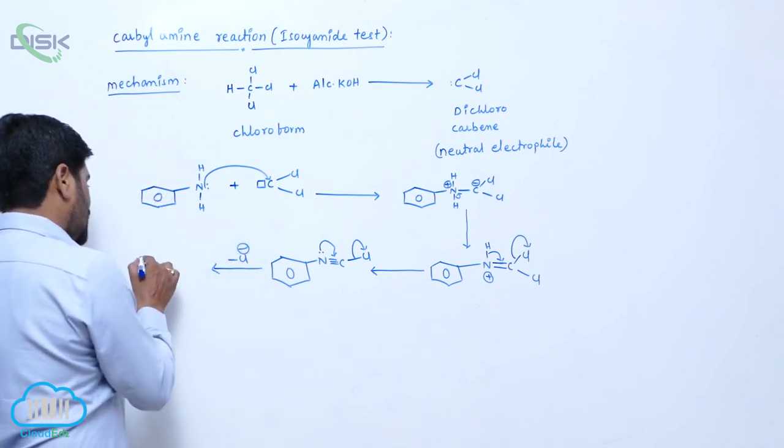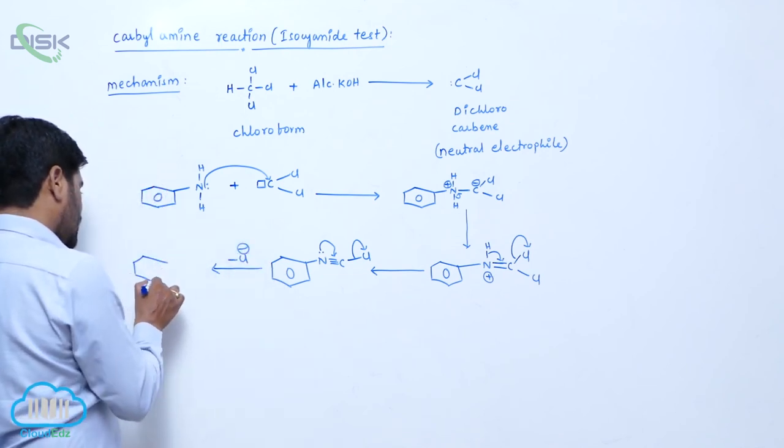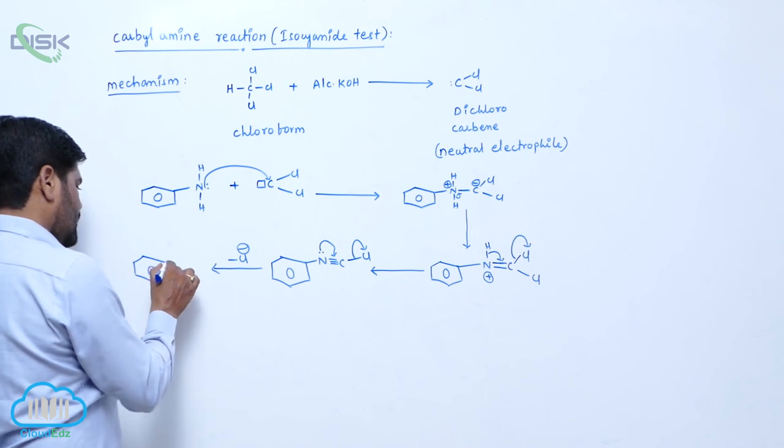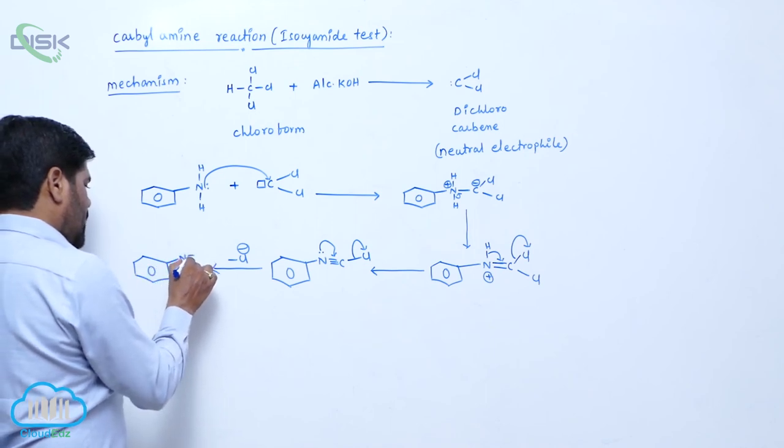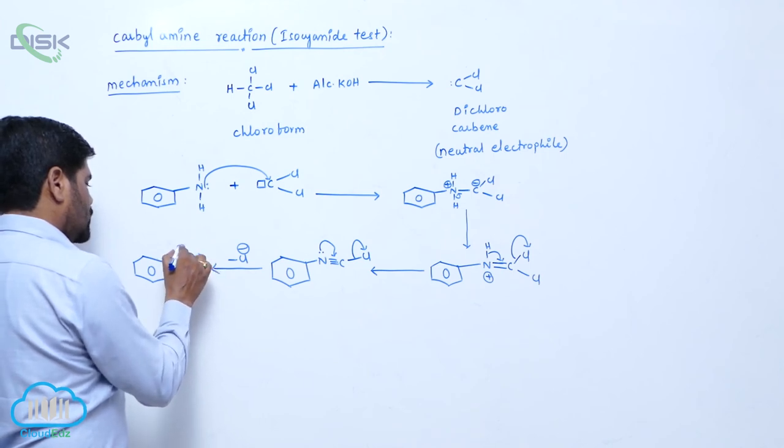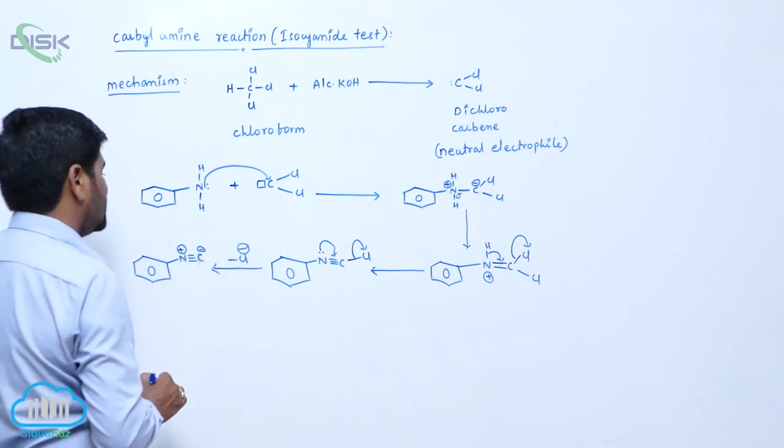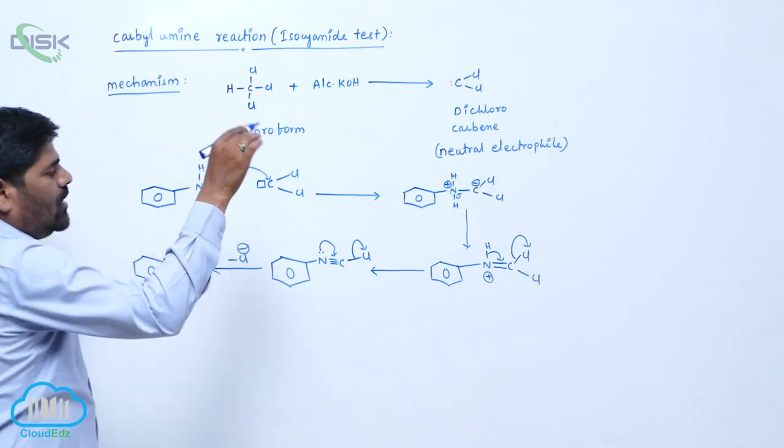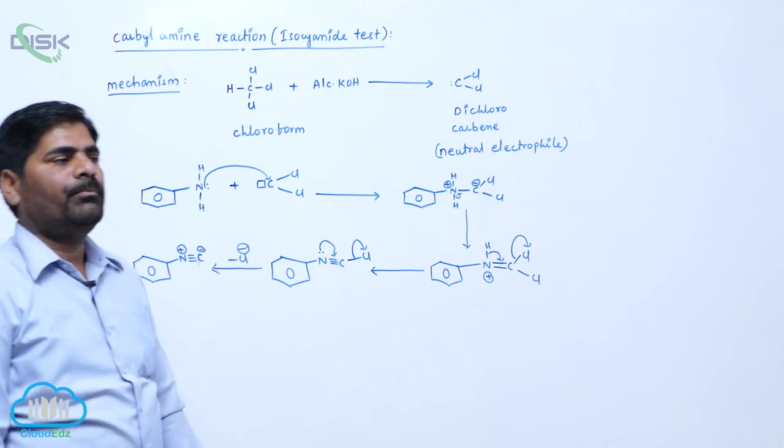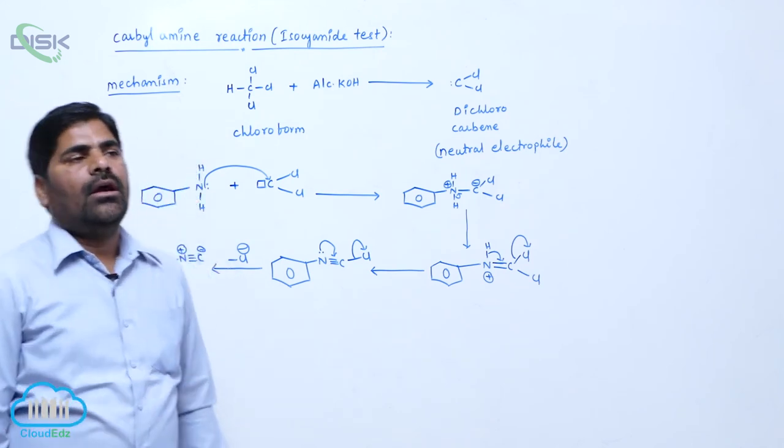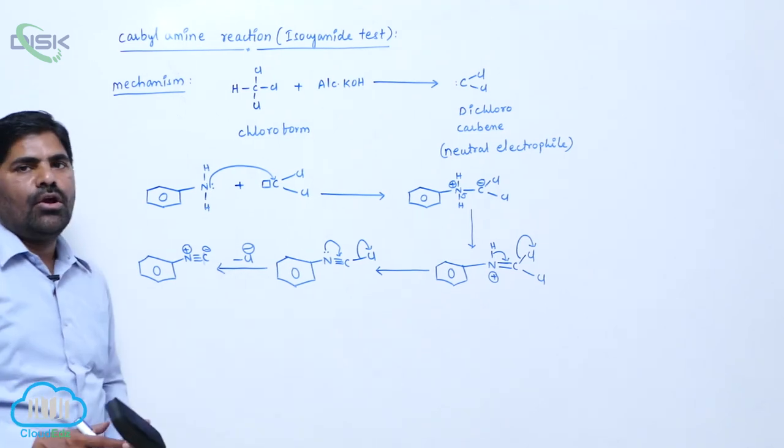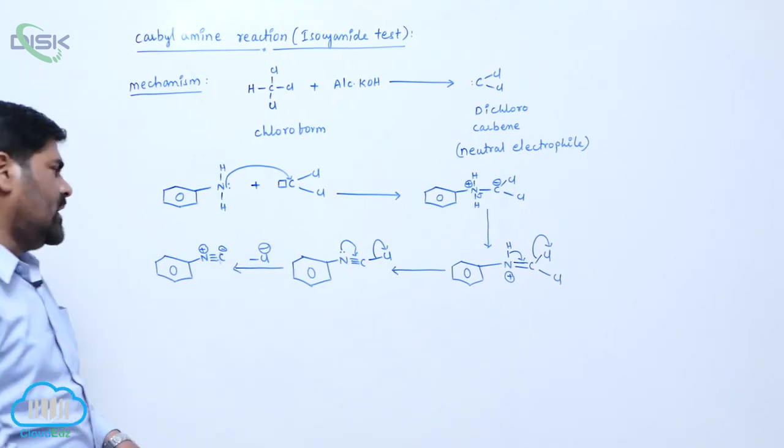Now it converts into N triple bond N, C. Because it is losing electrons positive, it is gaining electrons negative. So this is the mechanism involved in carbylamine reaction. This is known as phenyl isocyanide.